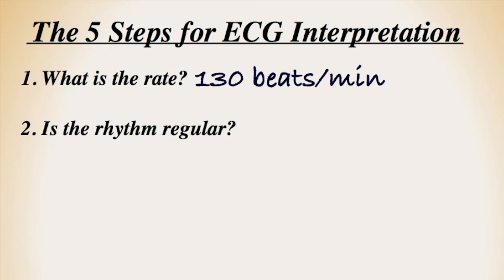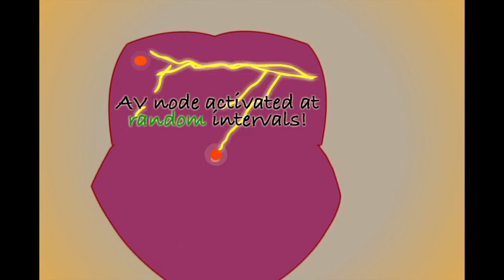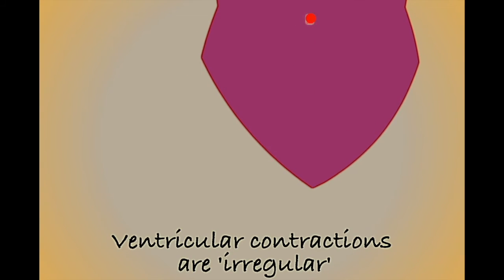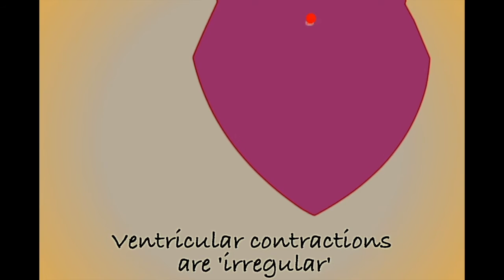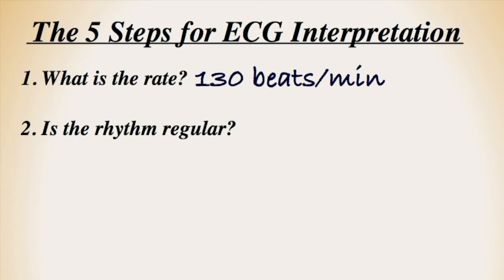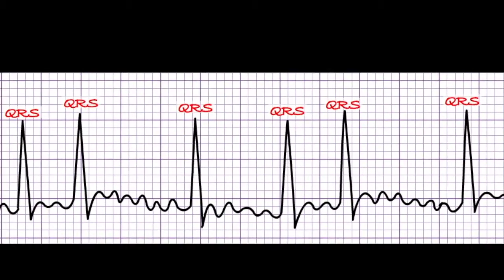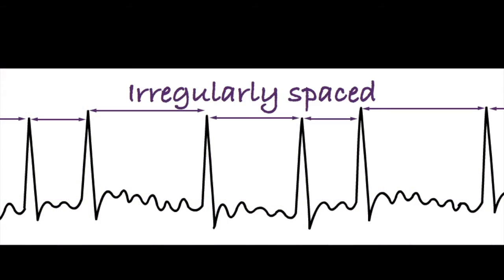The next thing we want to know is if the rhythm is regular or not. In a sinus rhythm we'd expect the heart to beat at regular intervals. However, in AF the disorganised flow of electricity through the atrial chambers leads to the irregular activation of the ventricular chambers. Irregularly spaced QRS complexes are therefore one of the diagnostic characteristics of AF, and the QRS complexes in this ECG are clearly irregularly spaced, making it possible that this ECG represents a heart in atrial fibrillation.